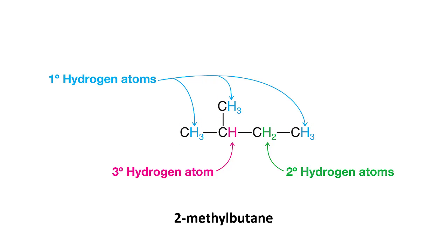A hydrogen atom attached to a primary carbon atom is called a primary hydrogen atom or first degree hydrogen atom. A hydrogen atom attached to a secondary carbon atom is called a secondary hydrogen atom or second degree hydrogen atom. And a hydrogen atom attached to a tertiary carbon atom is called a tertiary hydrogen atom or third degree hydrogen atom.